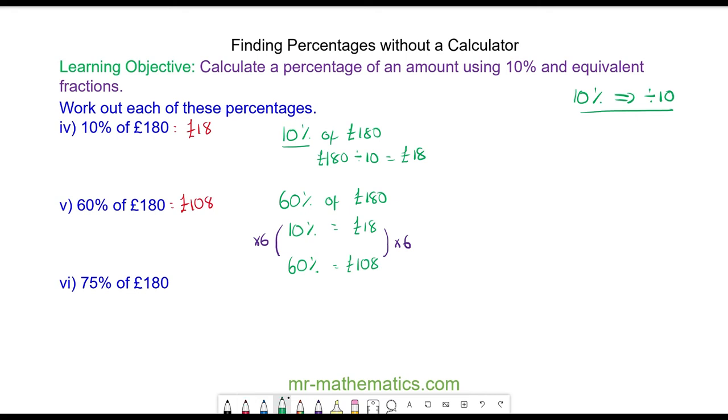Finally, for question 6, we have 75% of £180. One of the few ways we can do this: I'm going to begin by finding 10%, which I know is £18, and then I can work out 70% by multiplying by 7. 18 times 7 is £126.